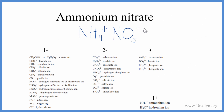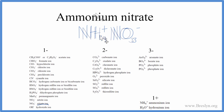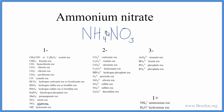Since the plus and the minus cancel out, that gives us a net charge of zero. That makes this the formula for ammonium nitrate. Let's get rid of the charges. Note that we don't have any metals here, but it's still ionic because we have the ammonium ion and the nitrate ion. They're attracted to each other because of the positive and negative charges, and that forms the ionic bond.